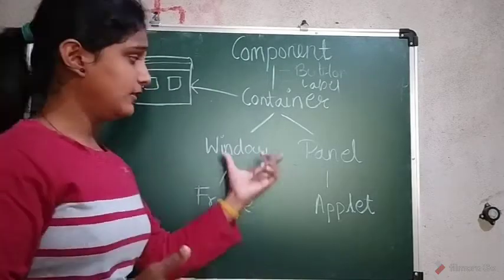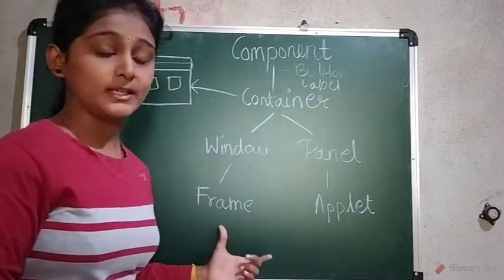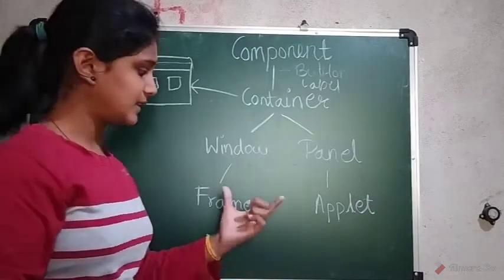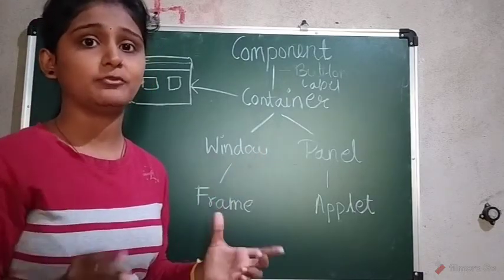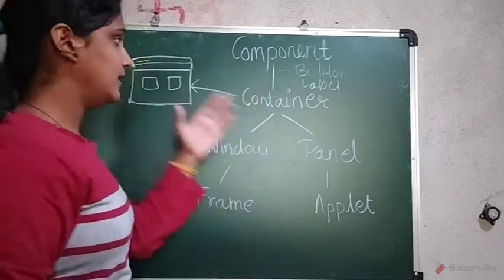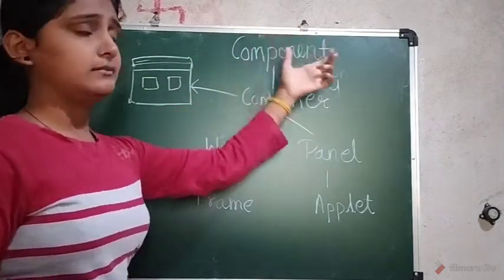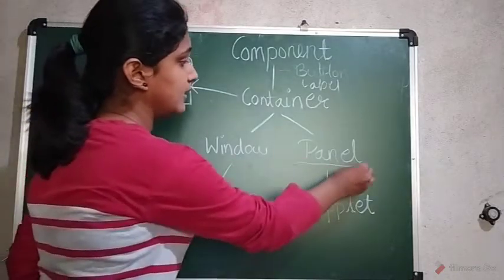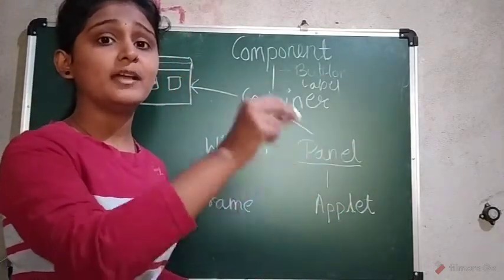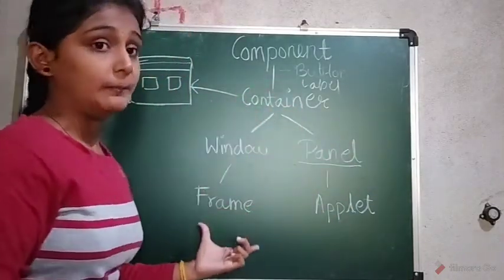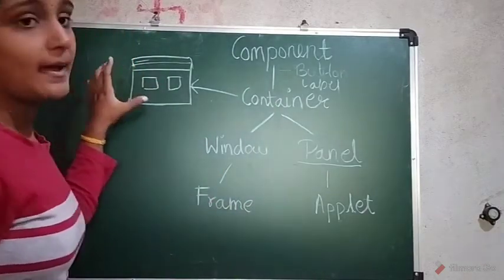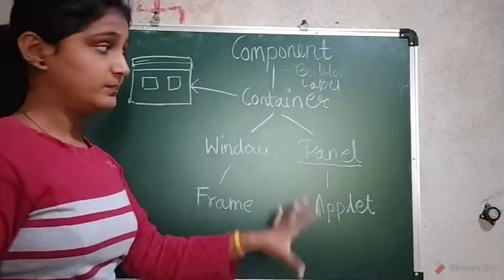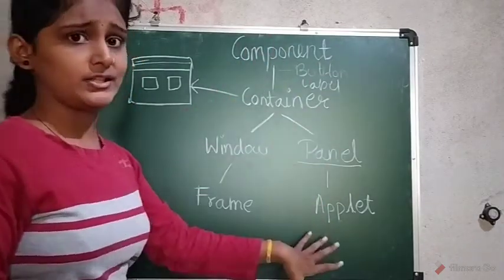Using the Frame object we create the window, and on that frame we add the different controls which come under the Component class. Opposite to Panel, Frame contains the title bar, menu bar, and borders. Using the Frame we create a window, and using the frame object we add different controls.